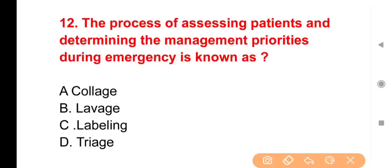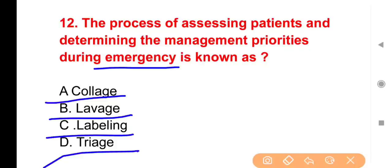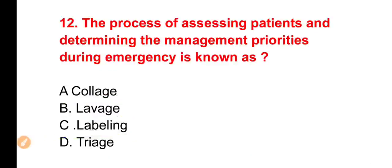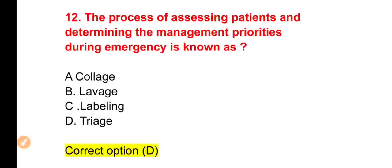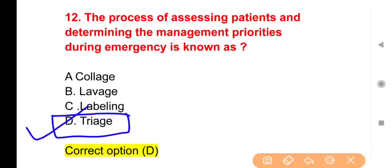Next question: The process of assessing patients and determining management priorities during an emergency is known as — Option A, College; Option B, Lawas; Option C, Labeling; Option D, Triage. In mass casualty situations, treating the most critical patients first and classifying others is called Triage. The right answer is Option D.